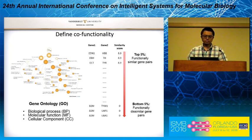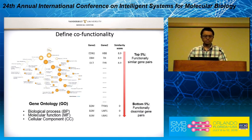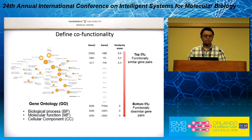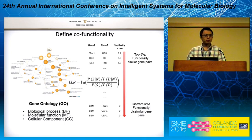We ranked this score from high to low and defined the top 5% gene pairs as functionally similar and the bottom 5% as functionally dissimilar. We then used the log likelihood ratio to evaluate the co-expression networks.